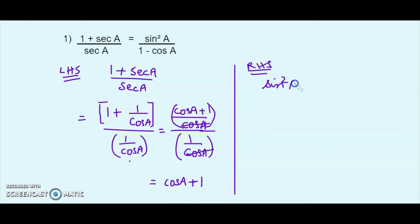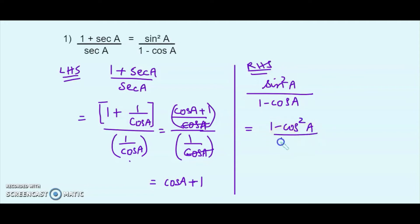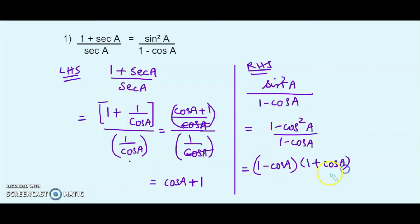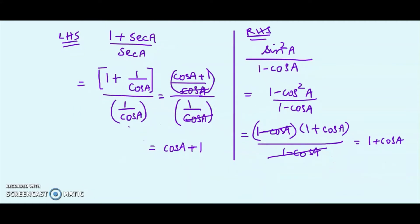For the RHS: sin²A / (1 − cos A). We substitute sin²A = 1 − cos²A, giving (1 − cos²A) / (1 − cos A). Applying the algebraic identity a² − b² = (a − b)(a + b), where a = 1 and b = cos A, we get (1 − cos A)(1 + cos A) / (1 − cos A). The (1 − cos A) cancels, leaving 1 + cos A. Both sides equal 1 + cos A, so it is proved.